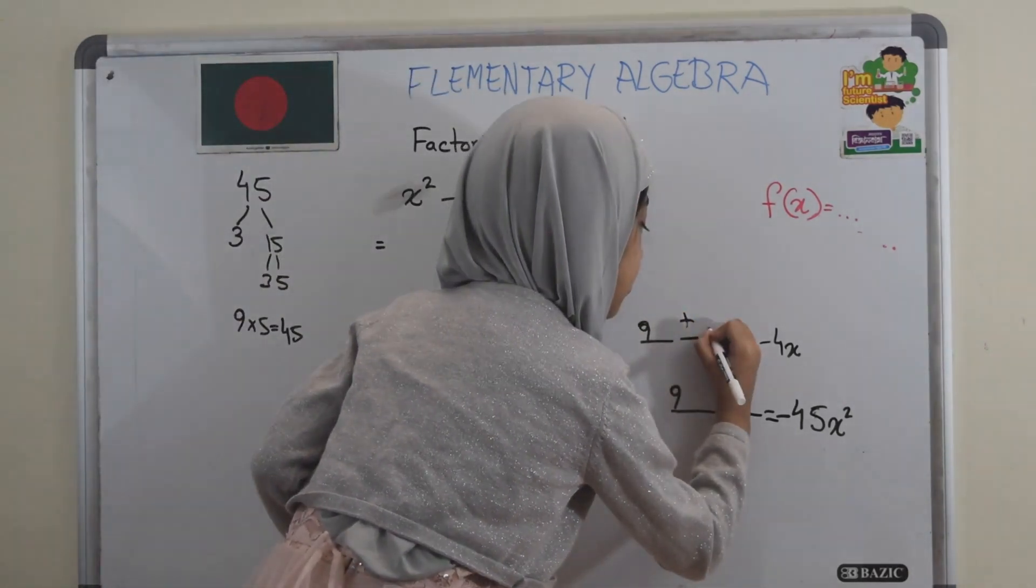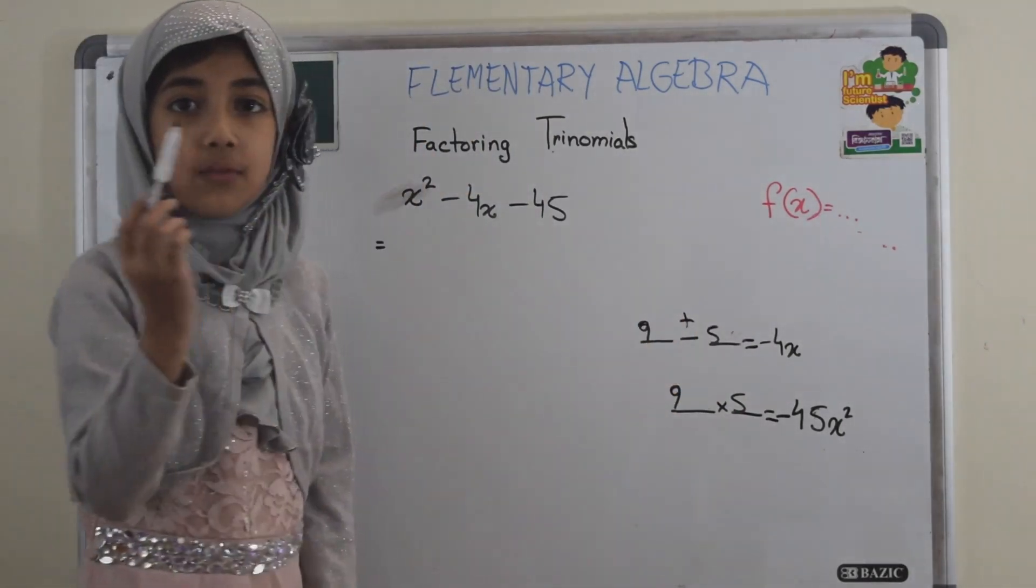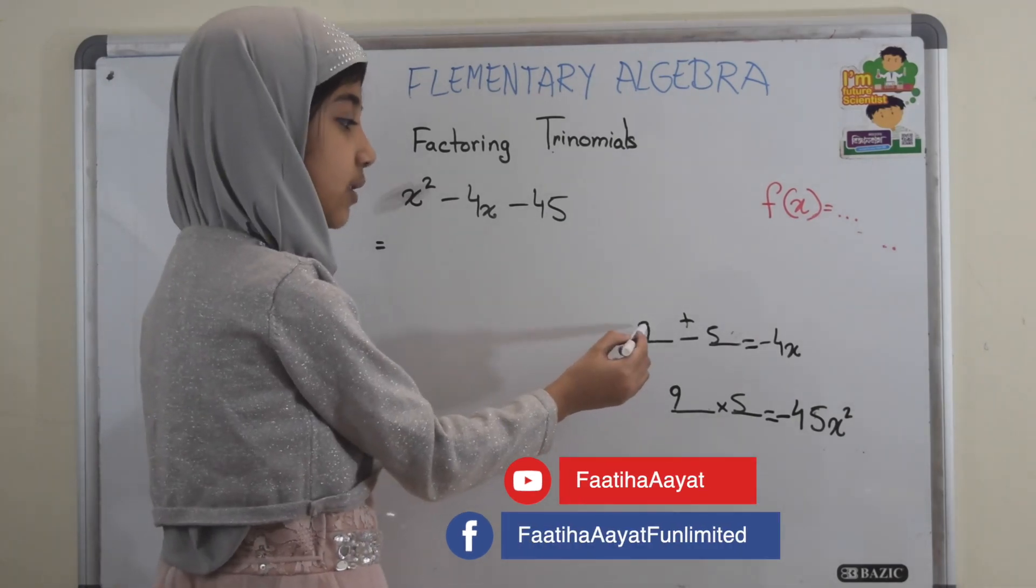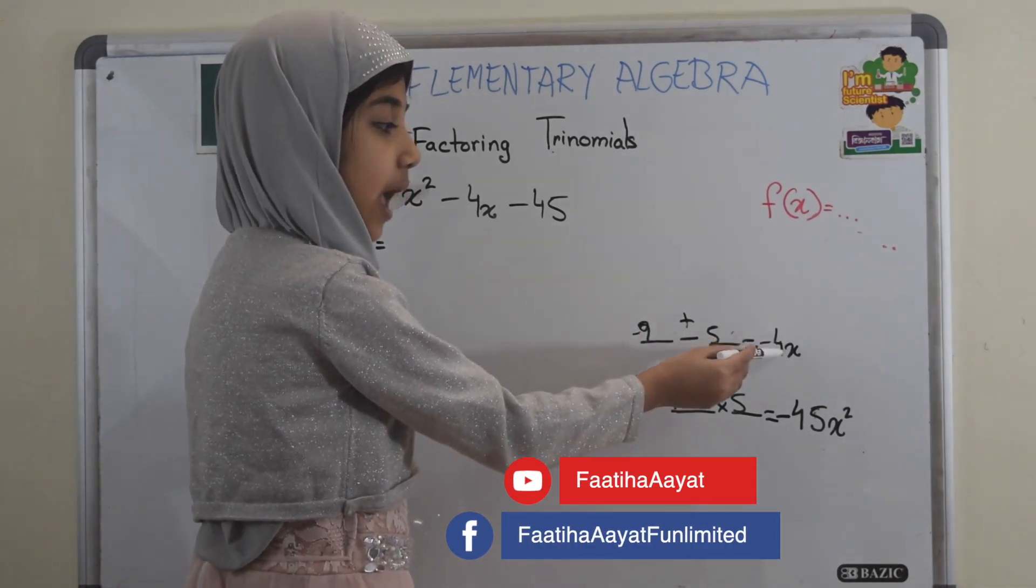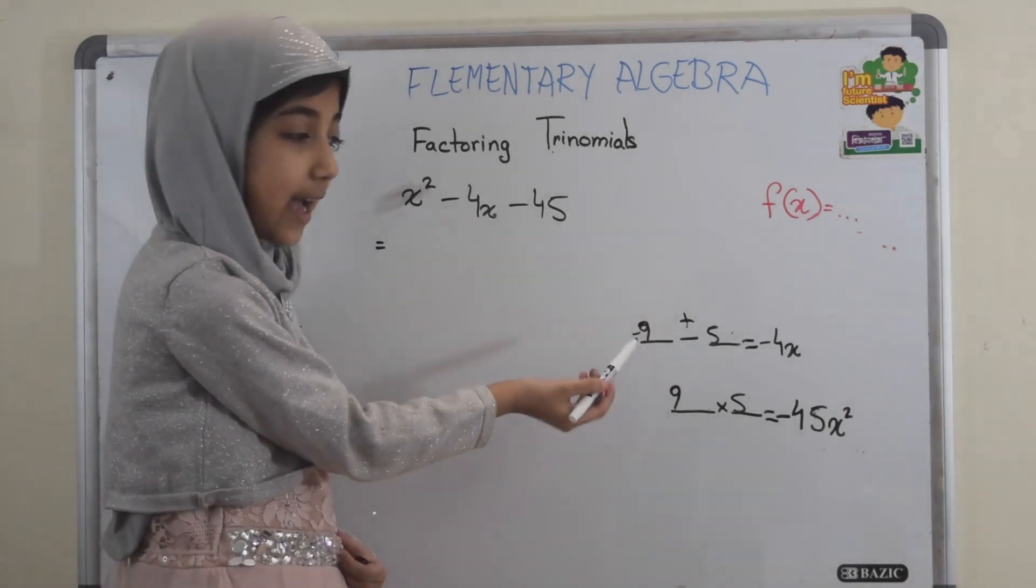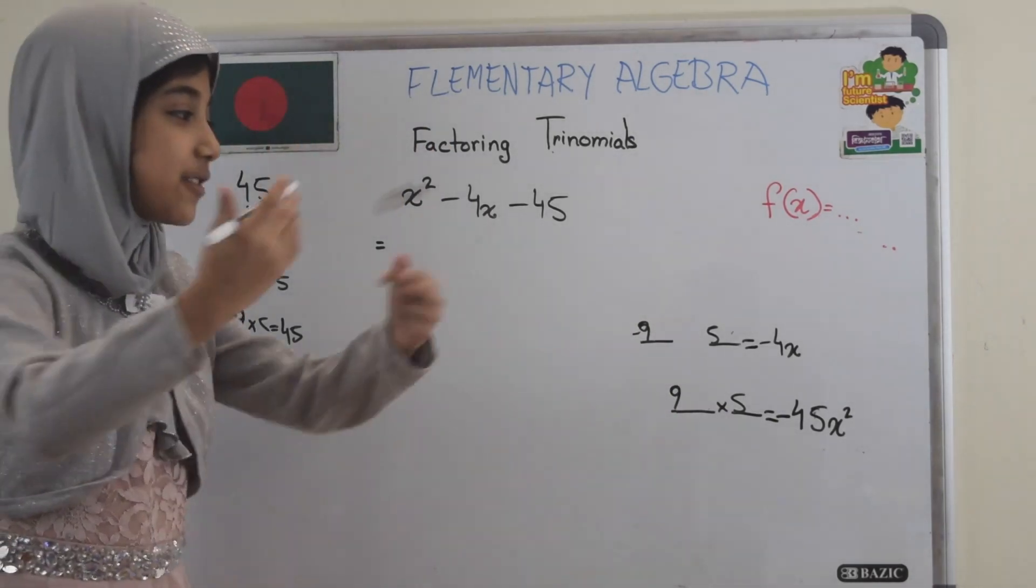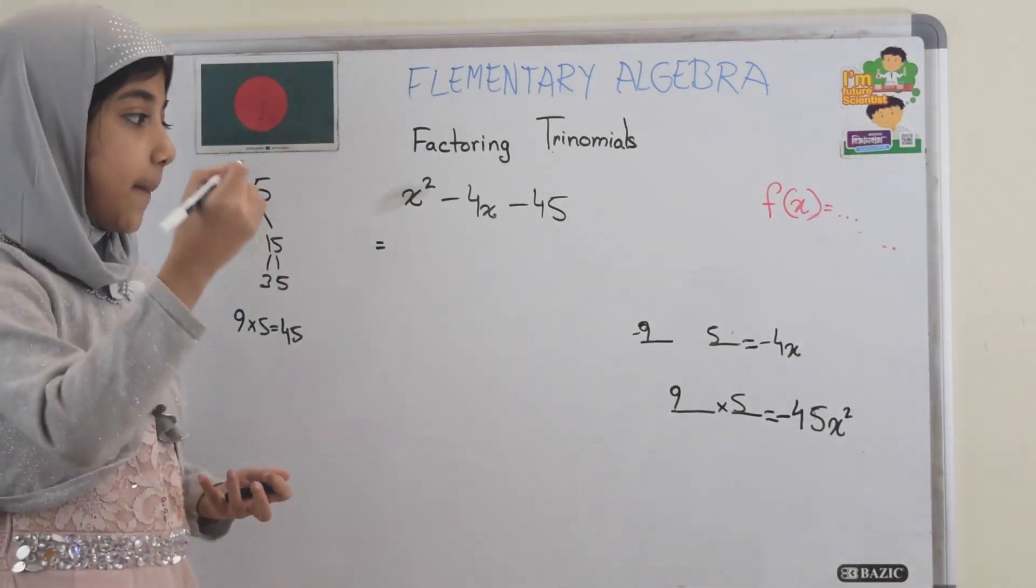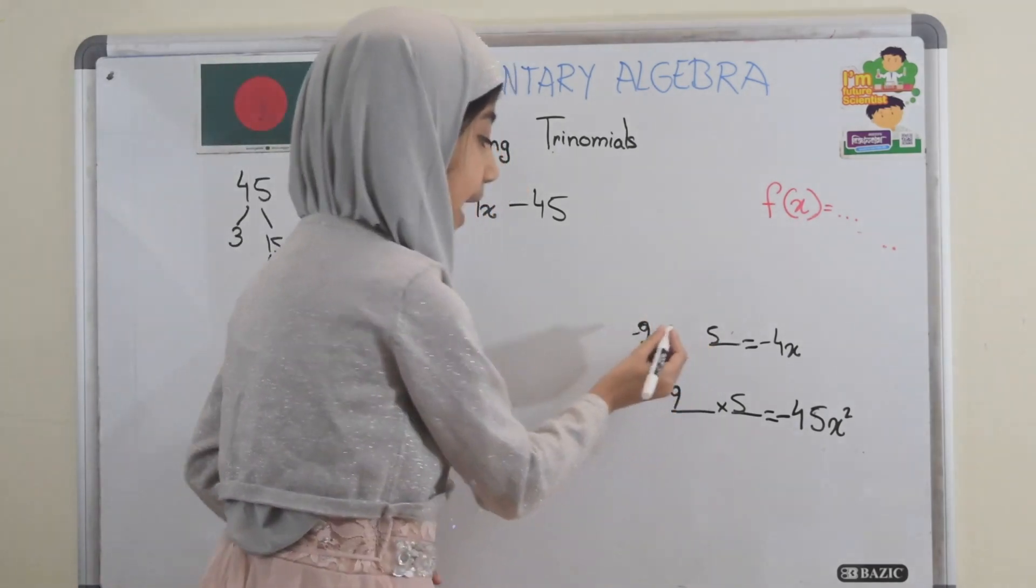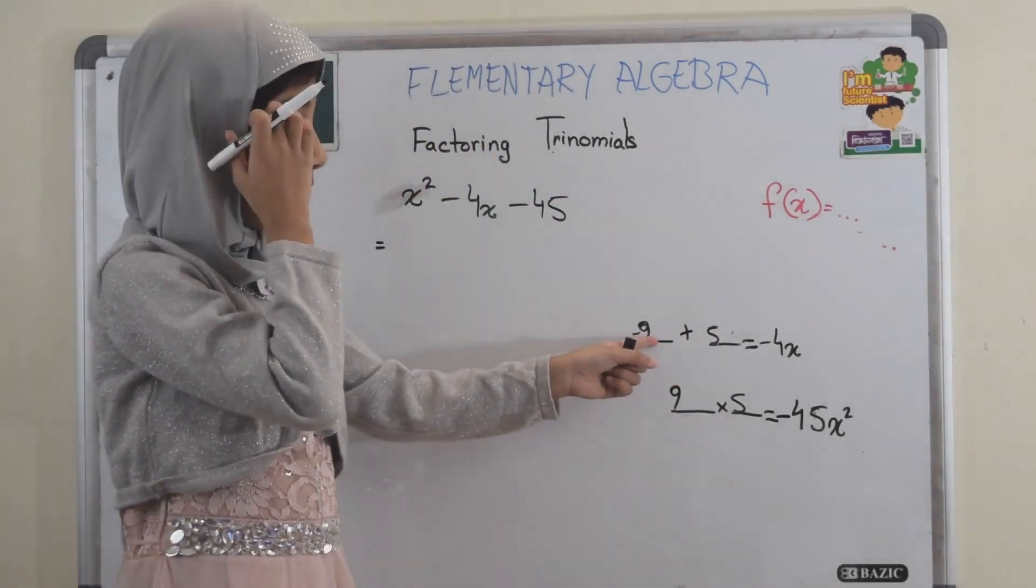So, as we can see, there is a minus sign before. And we know that the sign with the bigger number goes before the answer. That means probably it's minus 9. And so that means minus 9 and plus 5 makes minus 4. We know that minus and plus makes minus, and the bigger sign has to go there. So now we know that the sign has to be plus.